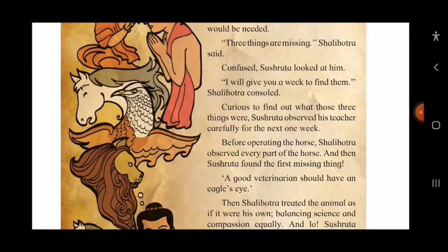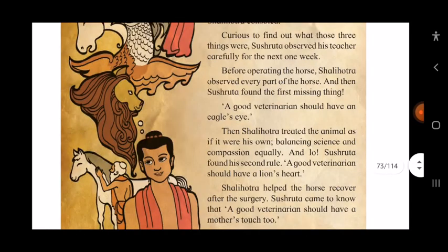Curious means eager to know. Sushruta was eager to know what three things were missing. He was a very bright student, so he observed his teacher carefully. Shalihotra observed every part of the horse before operating, and by watching this, Sushruta began to understand what he was missing. Observe means to watch carefully.